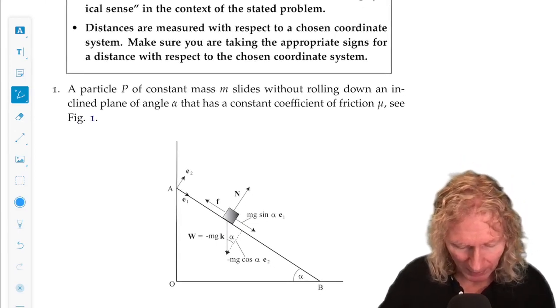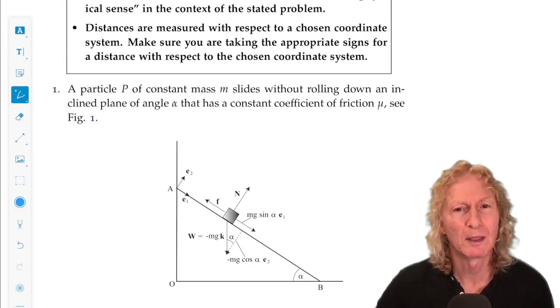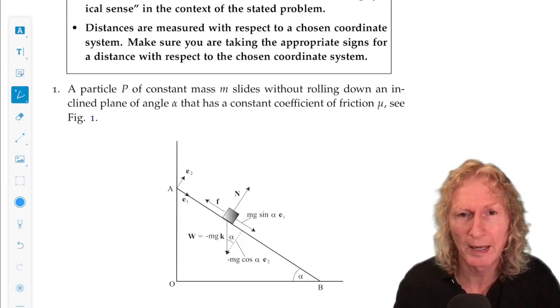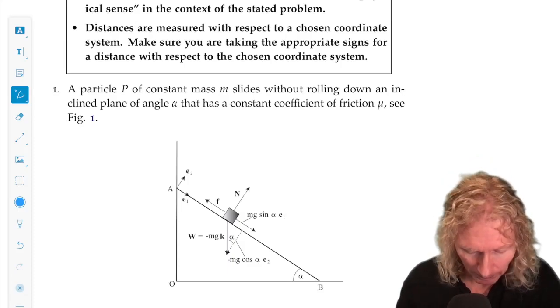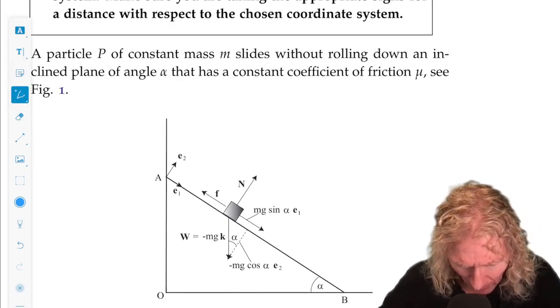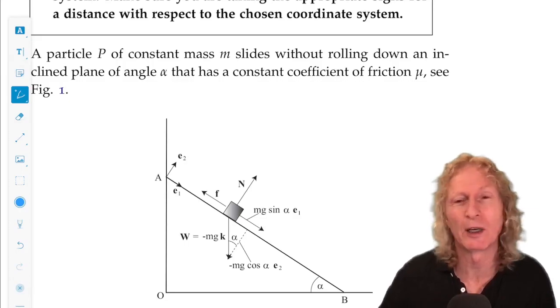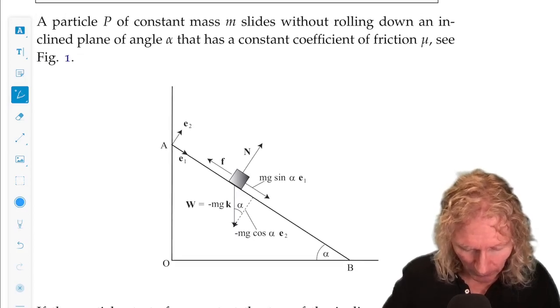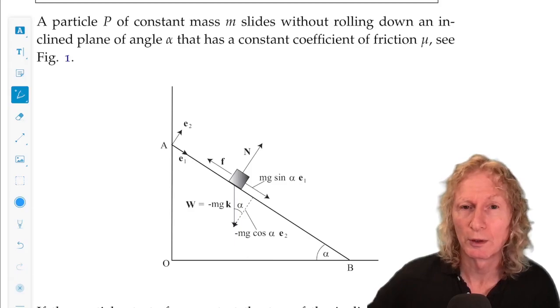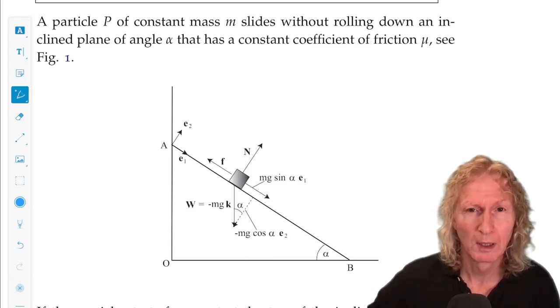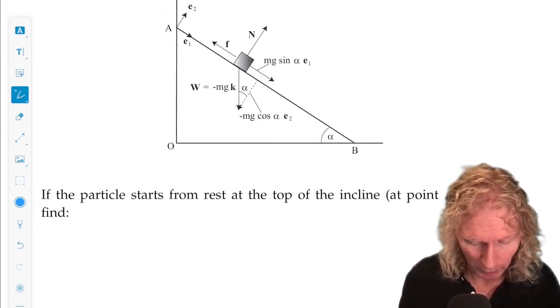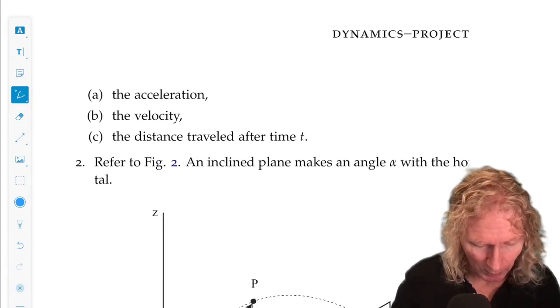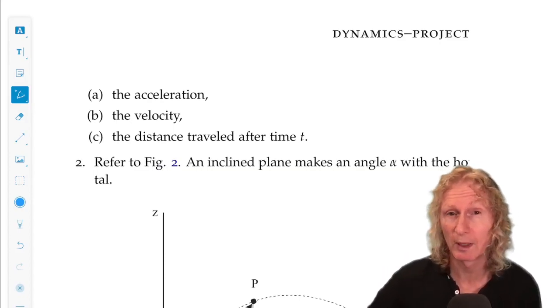Problem one is the exact same inclined plane problem I discussed in the chapter except there is a frictional force acting in the opposite direction. You should still use E1 and E2 as coordinates. You don't have to, you can use any coordinates you want, but I think those are the most convenient. The only difference is you have a frictional force which is proportional to the normal force acting in the direction opposite to motion. And you're supposed to compute the standard things: acceleration, velocity, and distance traveled as a function of time.